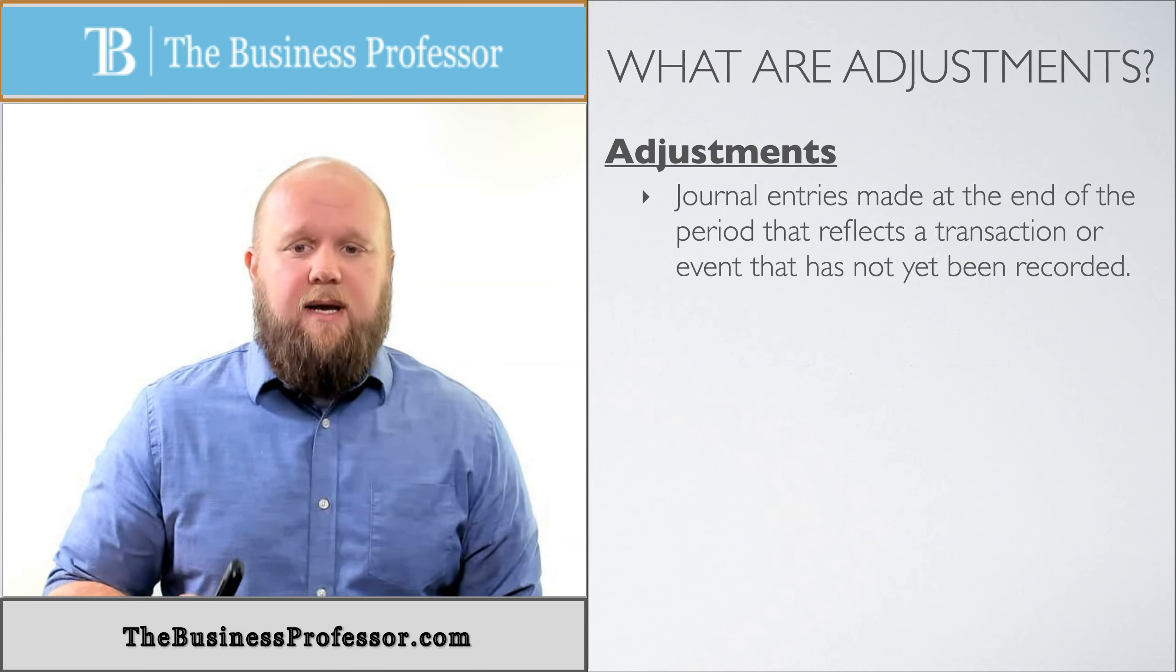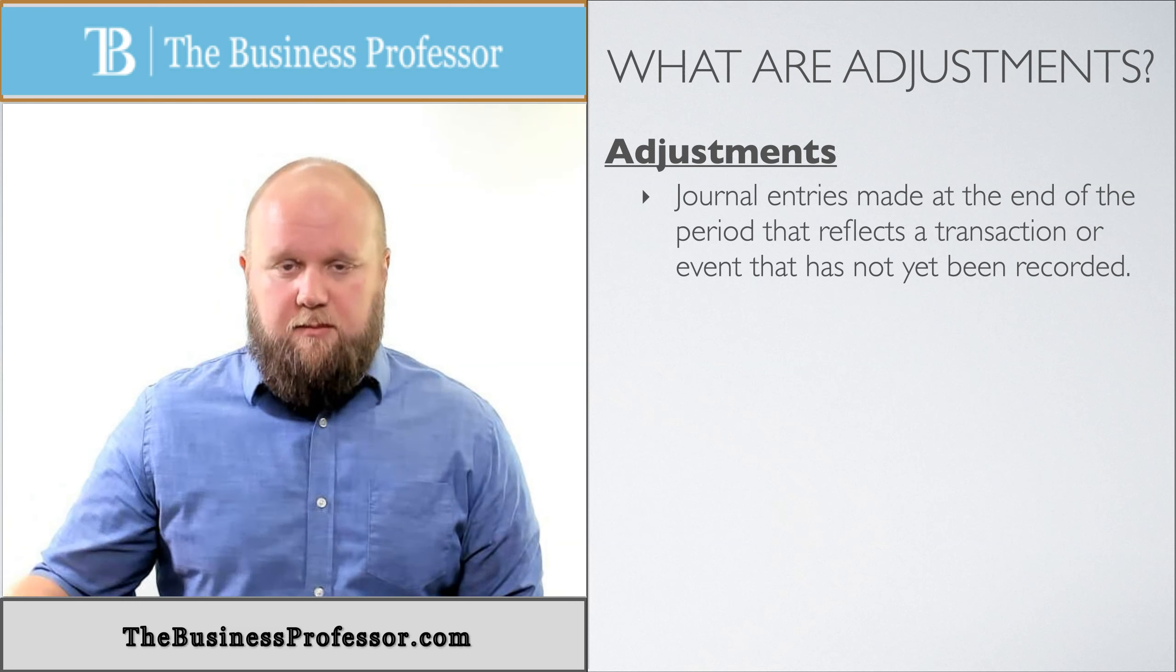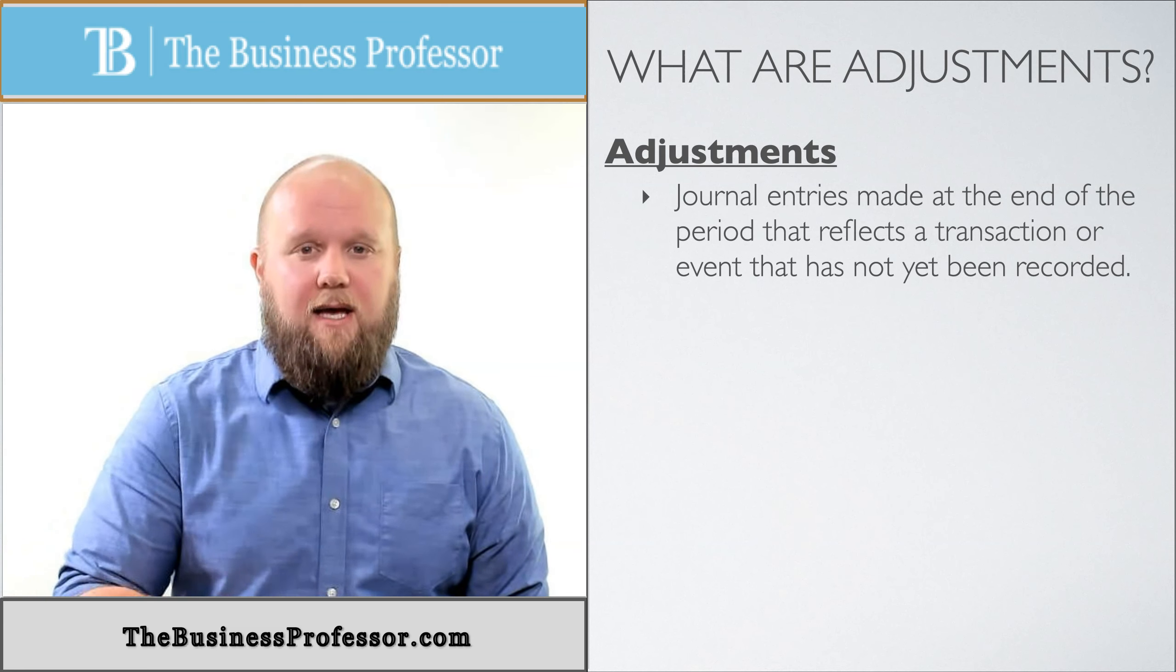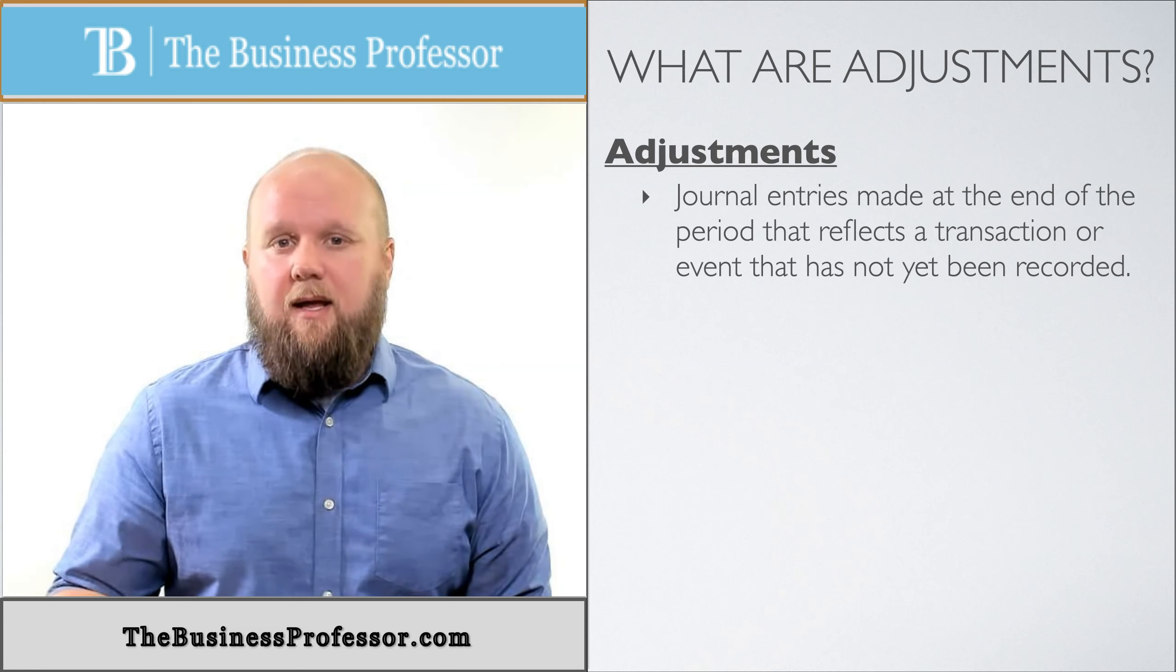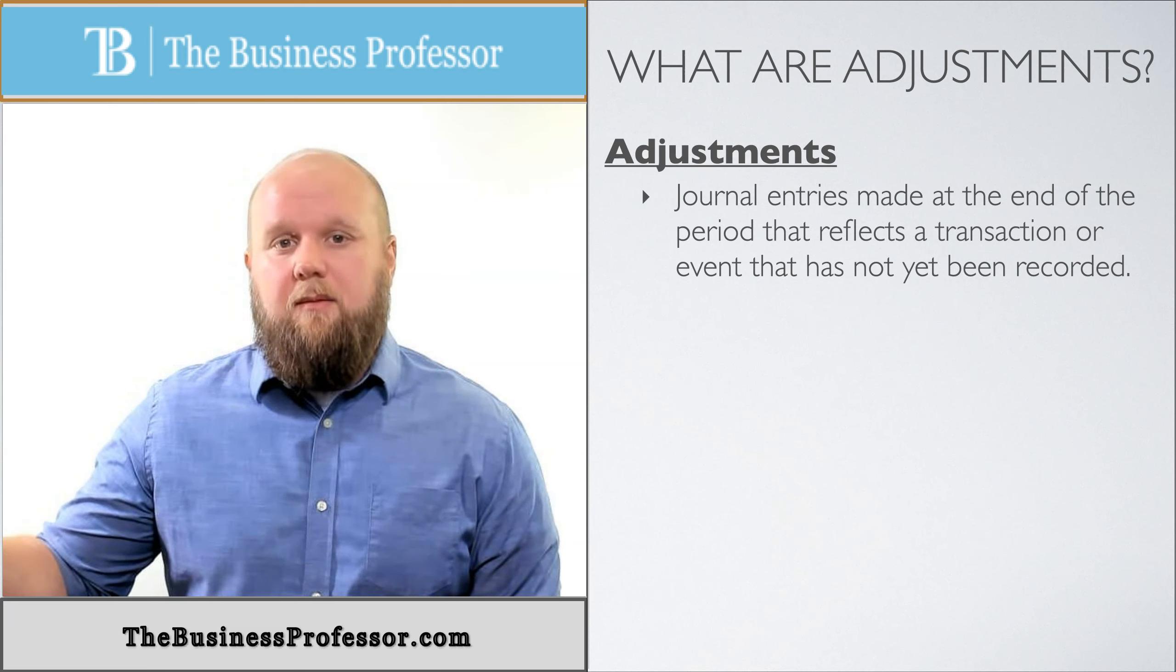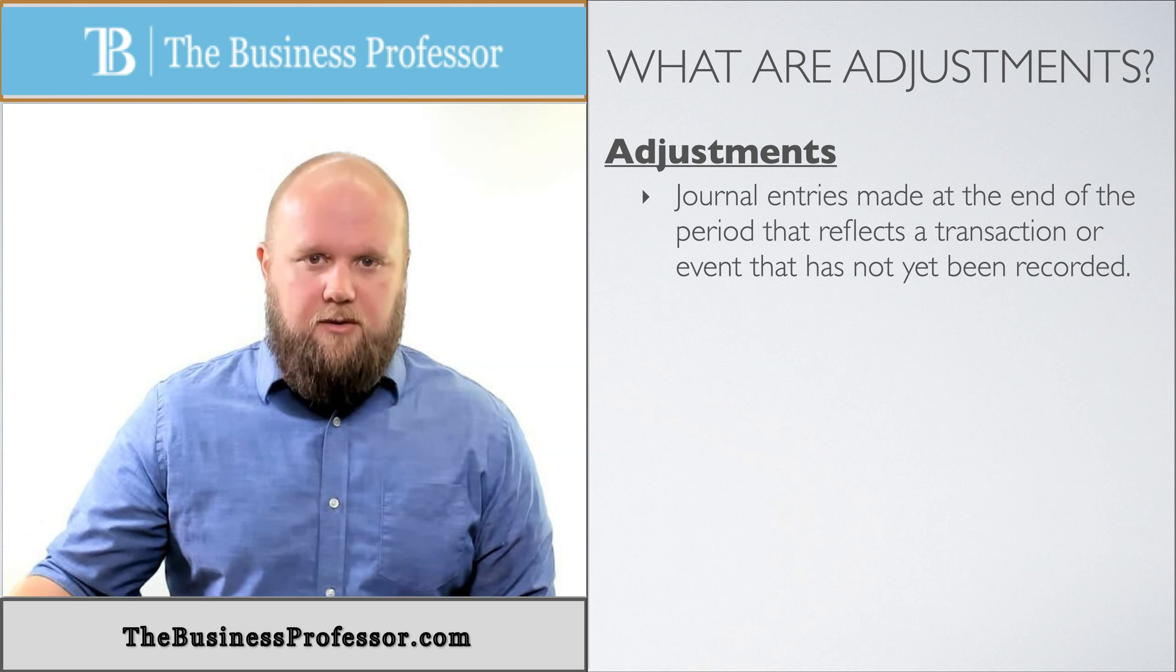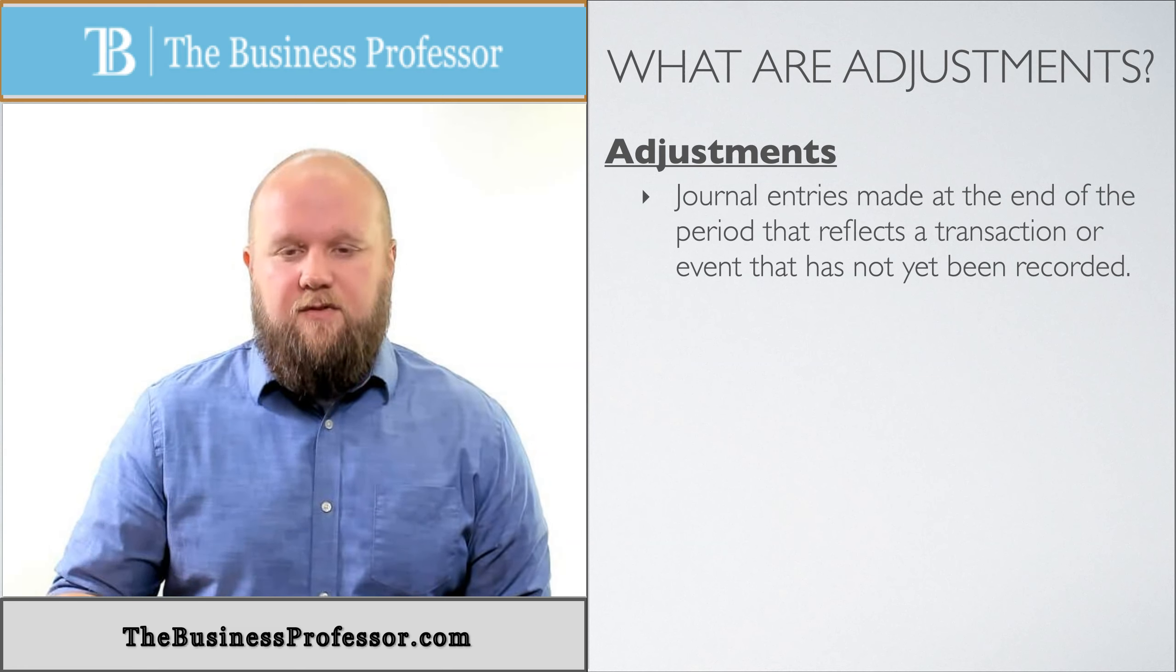Adjustments are journal entries that are made at the end of the period. So again, if you're dealing with a normal calendar year, you're dealing with December 31st. They happen on December 31st that reflect transactions or events that have not yet been recorded. There are some things that happen monthly and instead of doing one each month, you just do one at the very end because cash hasn't been affected yet. Or you don't know about it until the very end. You're going to do a journal entry because cash isn't affected yet. You're going to see some of these examples in the next videos.